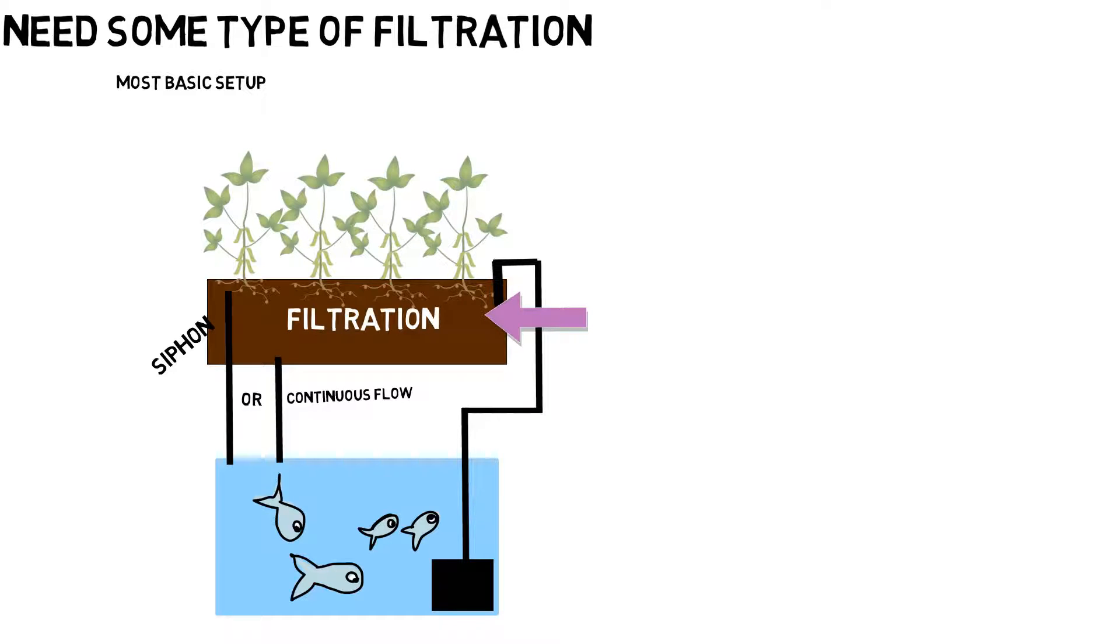So this is the most basic setup that you can use to put an aquaponic system together. Other than that, you can separate the mechanical and biological filtration and that works just as fine and even better. But it's a little bit more components to it, but it pays off if you do it right.